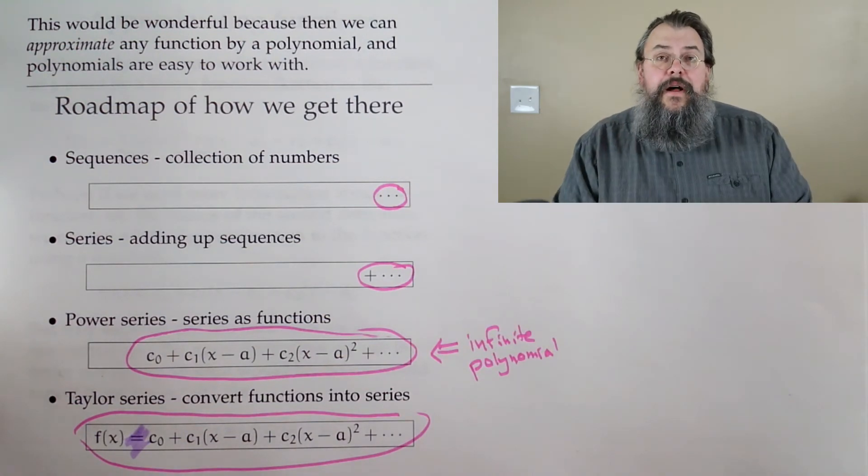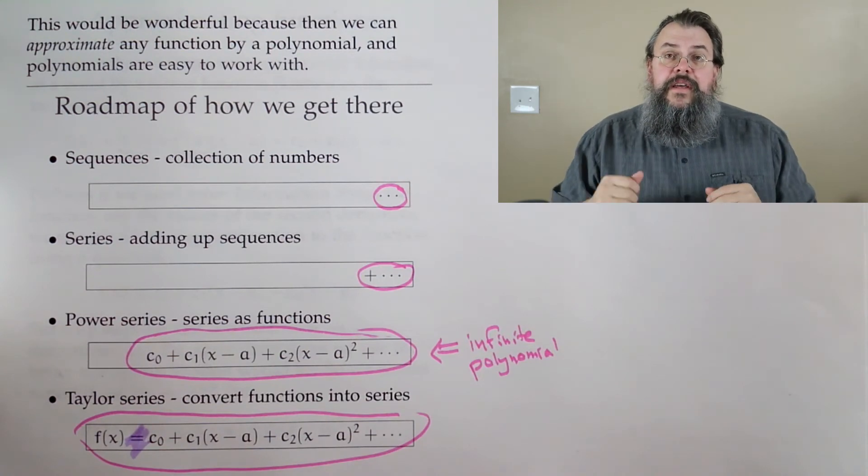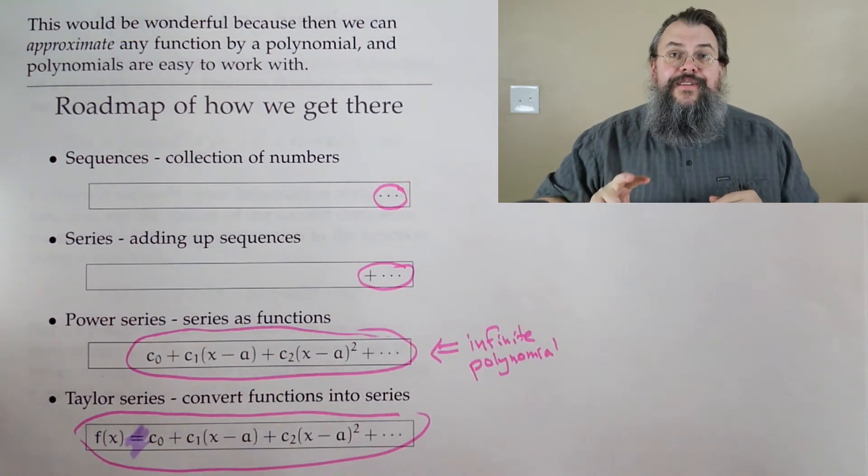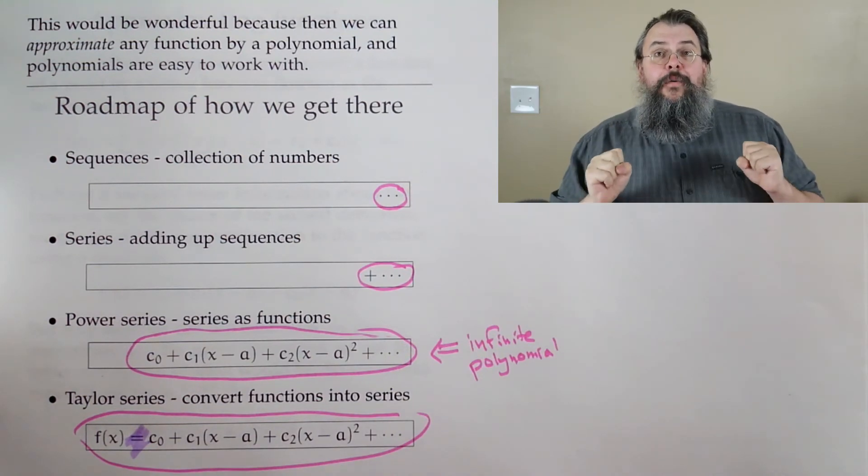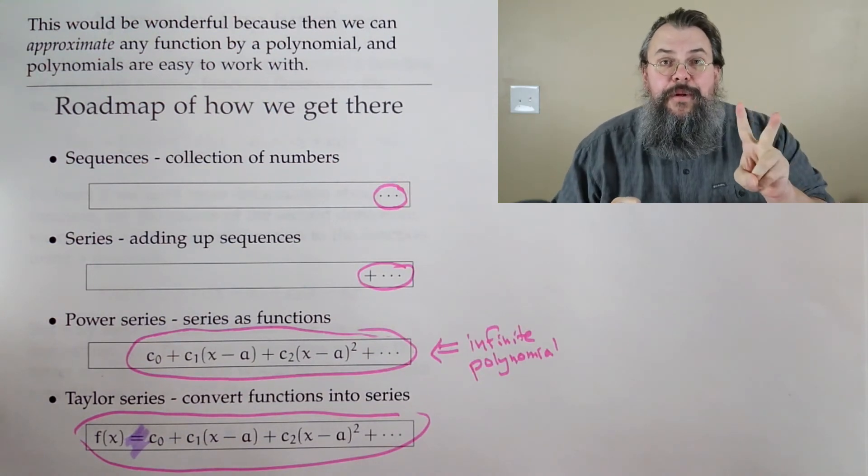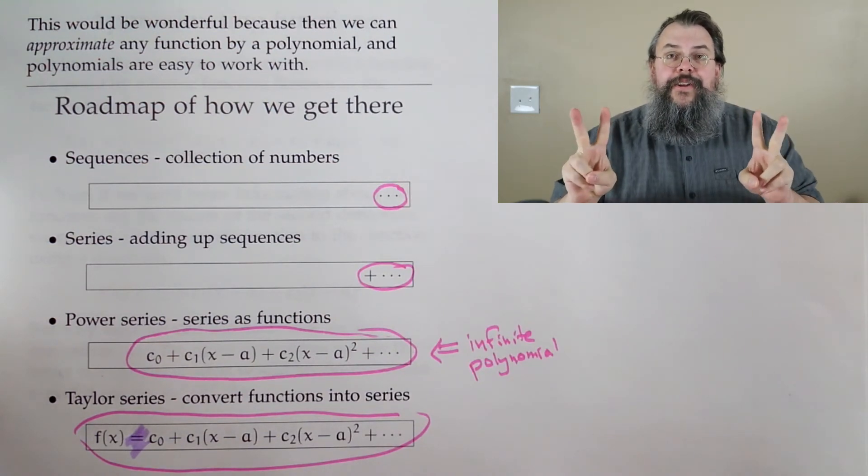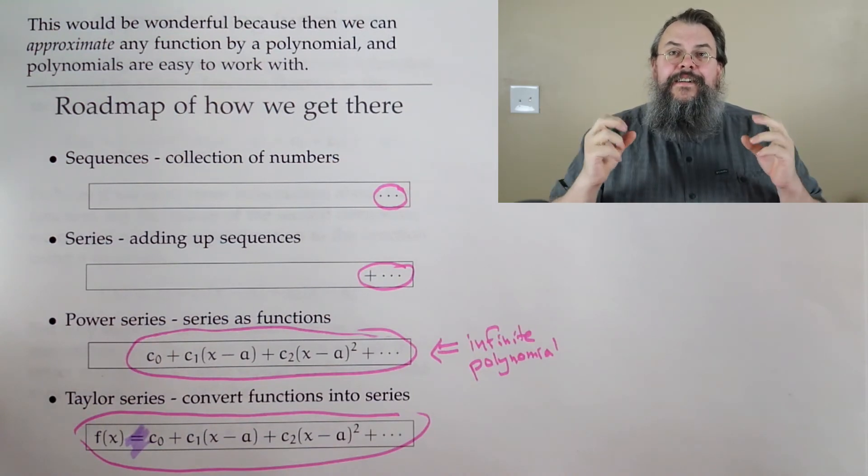Well, the nice thing about polynomials is how do you evaluate a polynomial? What do you need? You need to be able to do two things. You need to be able to add and to multiply. Now, what are computers good at? Add and multiply. Like, wow, perfect! Computers love polynomials! Aha!